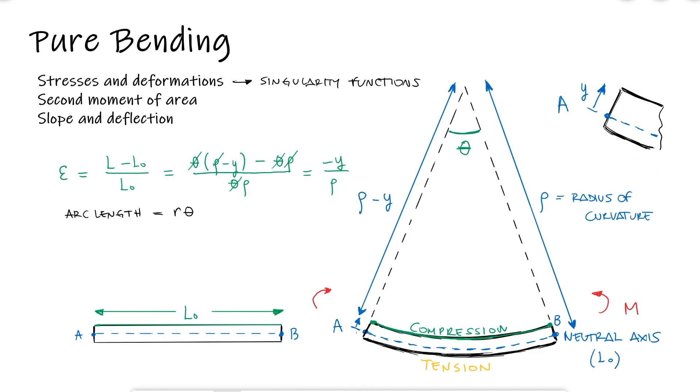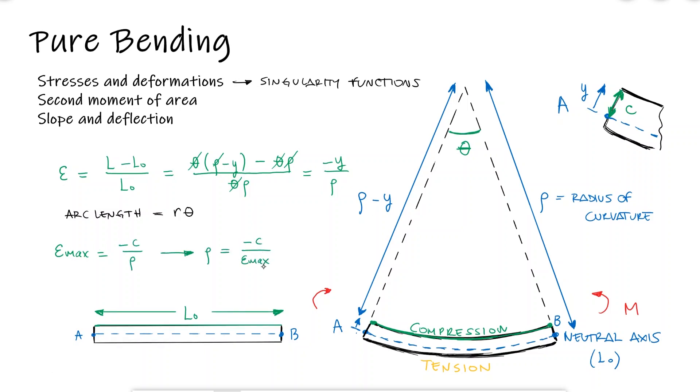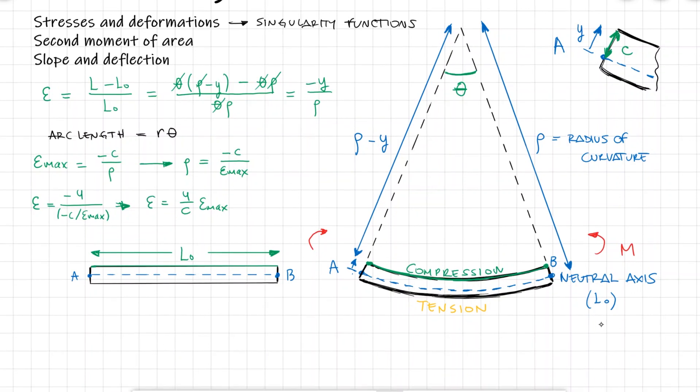This strain expression is true for any value of y, and I know that the maximum strain would be found for the largest distance from the neutral axis, which we usually call c. Therefore, the maximum strain is minus c over rho, and solving for rho in the maximum strain equation and substituting it in the strain equation, we see that the strain for any value of y is equal to y over c times the maximum strain.